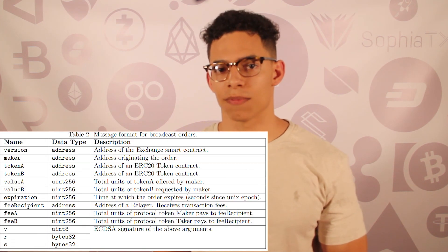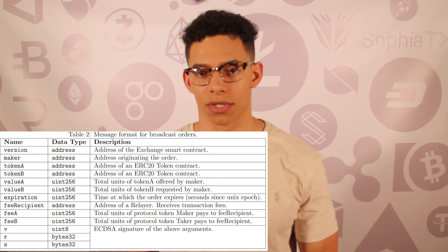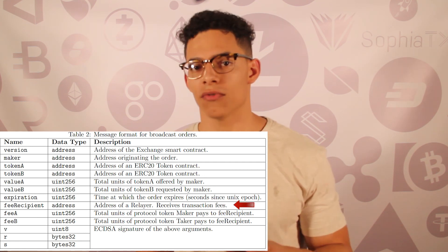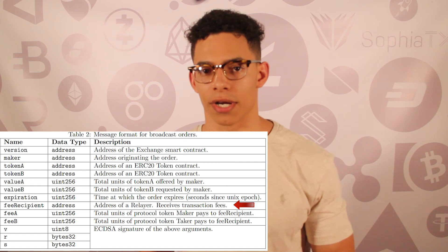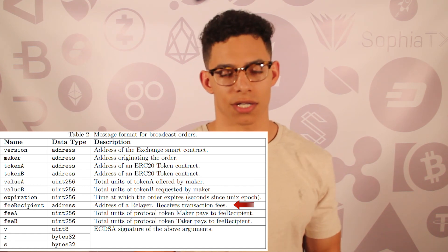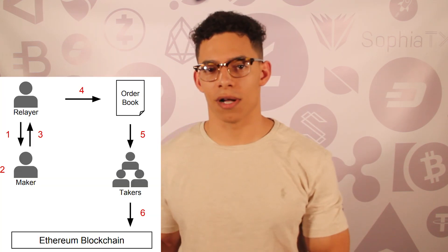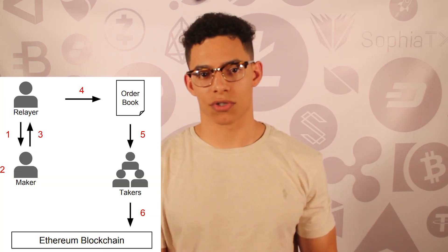Relayers don't need to execute trades because takers execute their own trades — meaning a user doesn't need to trust a relayer for a trade to be executed. On the 0x website you can see current relayers such as DEX, Dharma, or Paradex. The message format for broadcast orders differs slightly from point-to-point: a broadcast order can be filled by anyone, not just a specified address. There is also a transaction fee structure meant to incentivize relayers for hosting an order book.